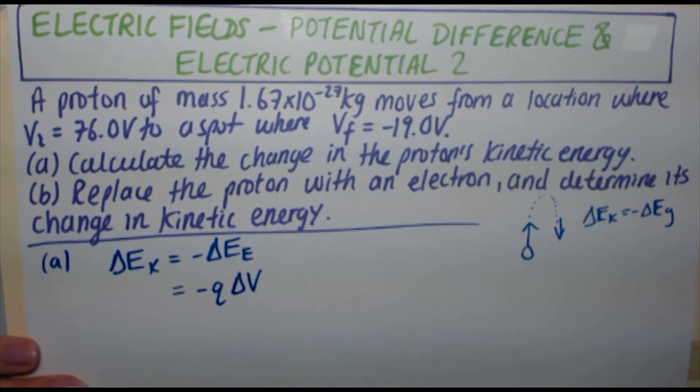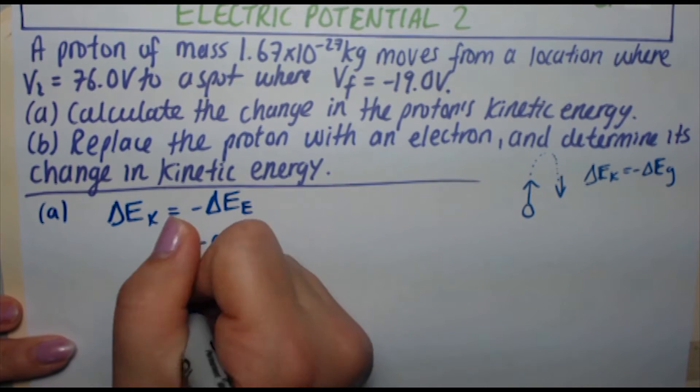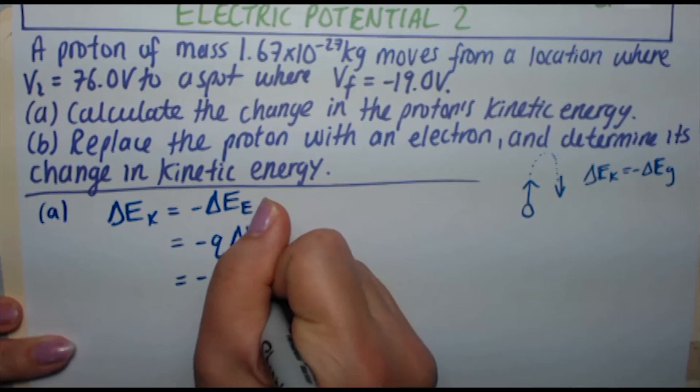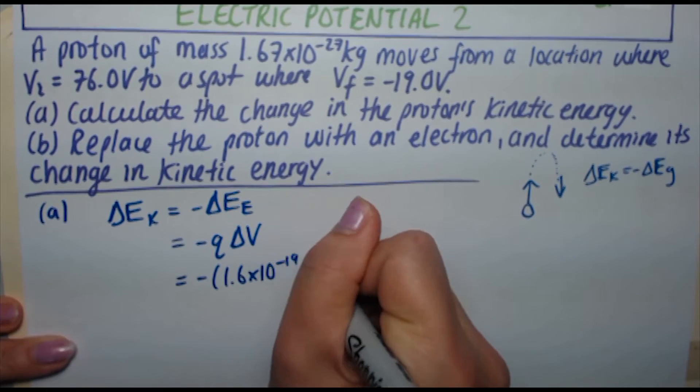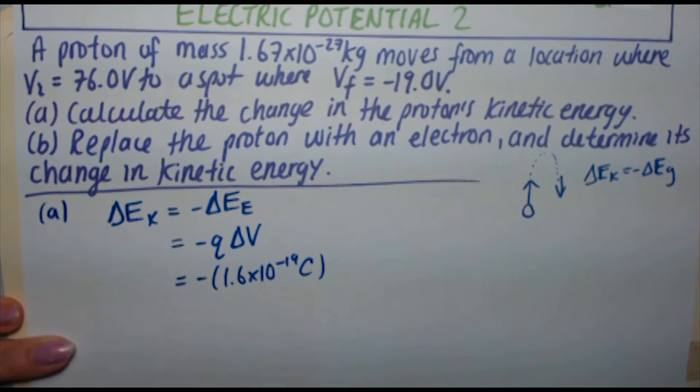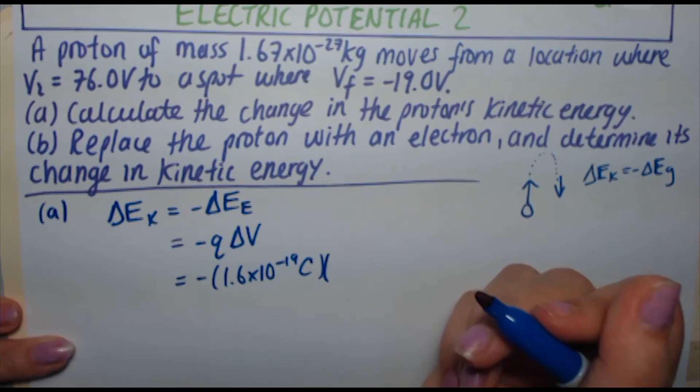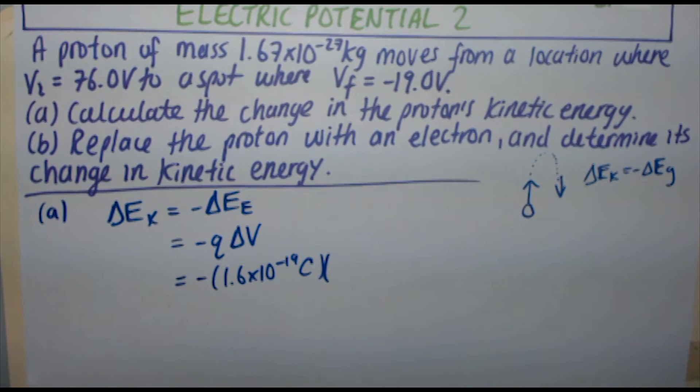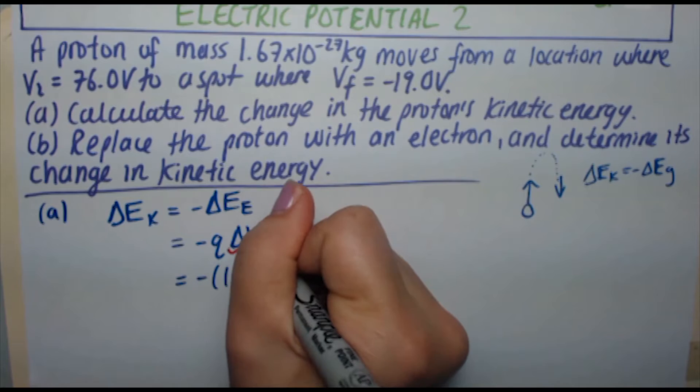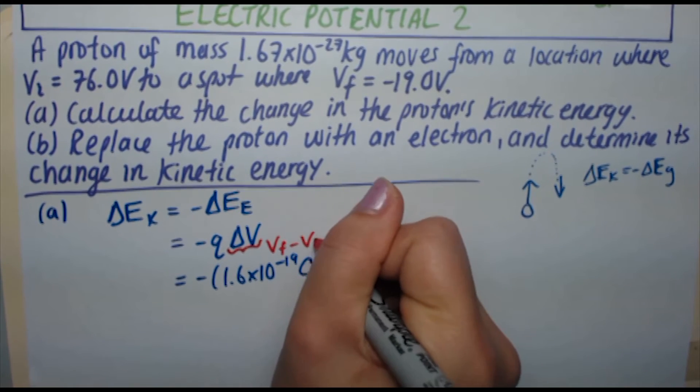Since we're dealing with a proton, same charge as an electron, just opposite sign, we plug in 1.6 times 10 to the minus 19 coulombs for Q. And my delta V is going to be V final minus V initial. Delta just means change. So this is just going to be VF minus VI.